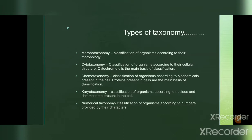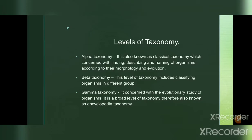The next point is levels of taxonomy. There are three main levels: alpha taxonomy, beta taxonomy, and gamma taxonomy. Alpha taxonomy, also known as classical taxonomy, is concerned with finding, describing, and naming organisms according to their morphology and evolution.